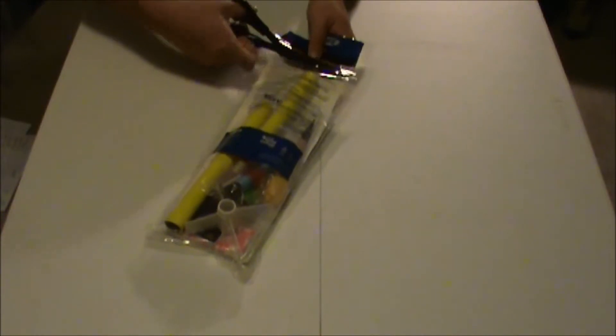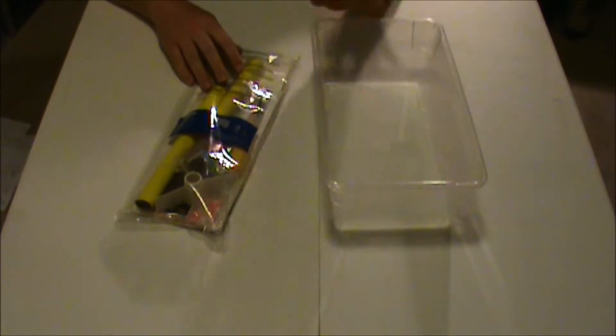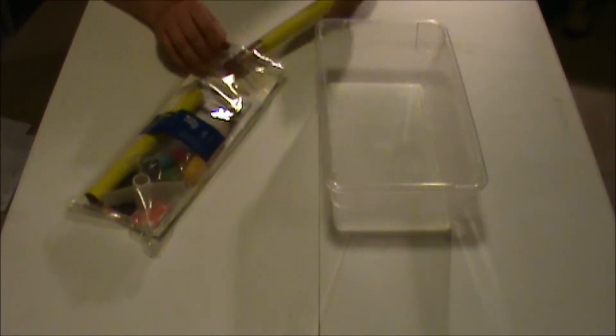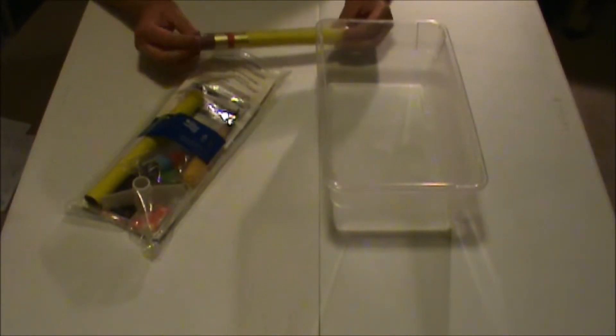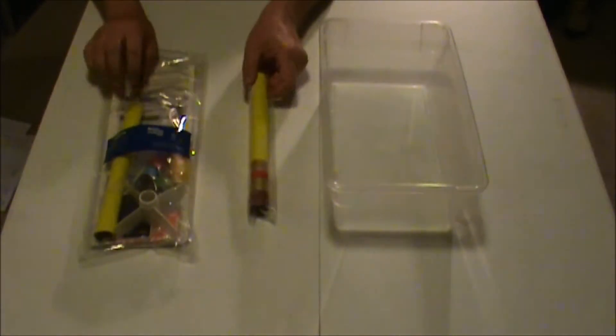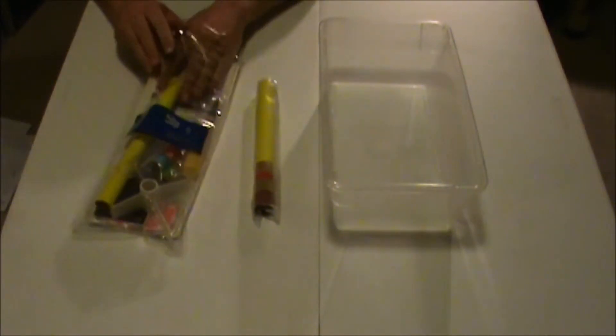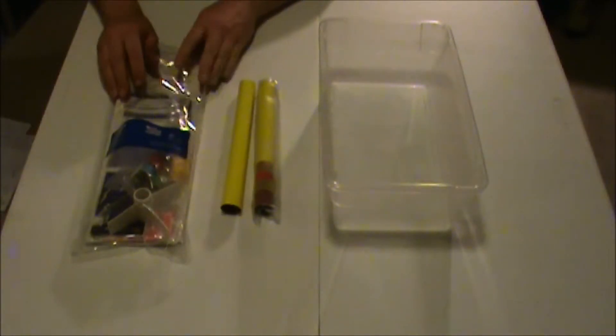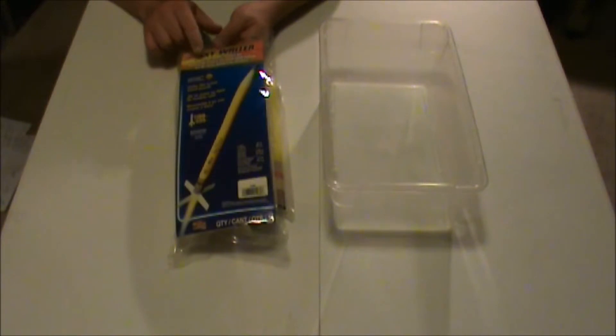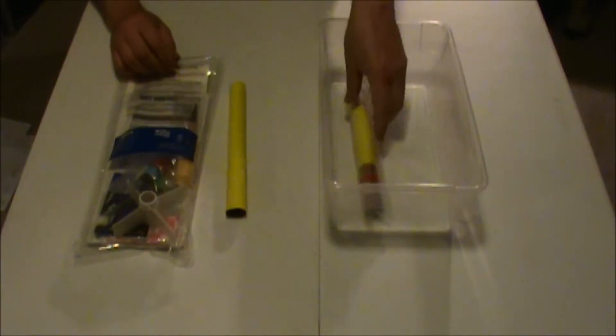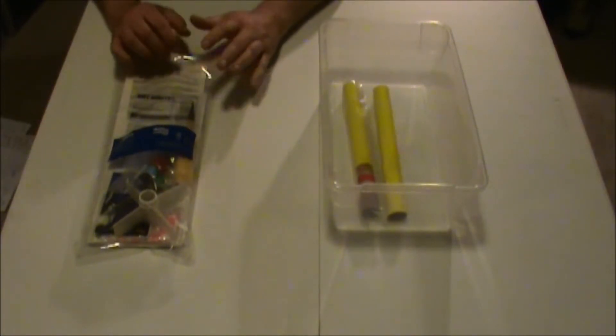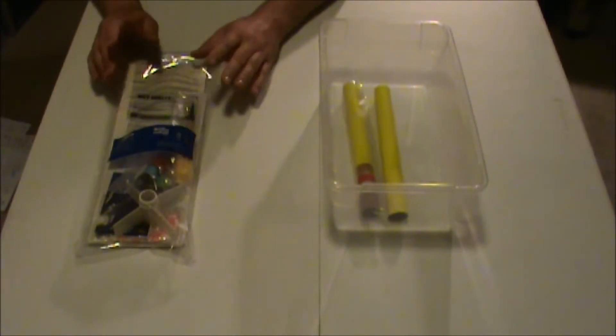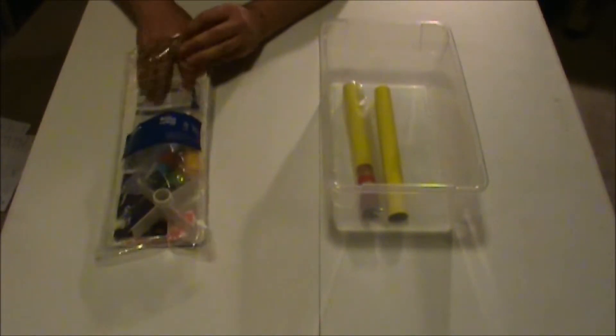Let me go ahead and open this up. Whenever I do a build or unpackaging, I always like to place a bin right here for the parts so we don't lose any. Something about these rockets is they're pre-colored. I believe this one is also pre-painted, and the decals are peel and stick, being very easy.